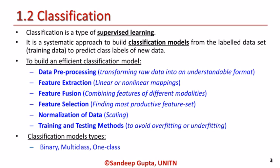Steps to process training data are: data pre-processing, which transforms raw data into an understandable format; feature extraction, which extracts features from raw data using linear or non-linear mappings; feature fusion techniques, which combine features obtained from different modalities; feature selection methods, which find the most productive feature set; and normalization of data, which involves data scaling algorithms for uniformity.